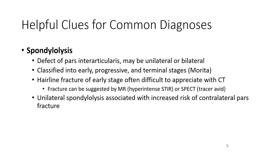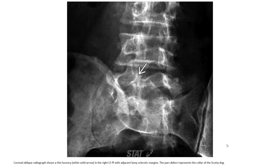Isthmic spondylolisthesis involves a defect of the pars interarticularis, which may be unilateral or bilateral, classified into early, progressive, and terminal stages. The hairline fracture of the early stage is often difficult to appreciate on CT. Unilateral spondylolysis is associated with increased risk of contralateral fracture. Coronal oblique radiograph shows a lucent defect in the right pars interarticularis with adjacent bony sclerotic margin, representing the collar of the Scottie dog sign.